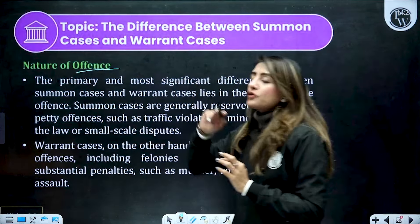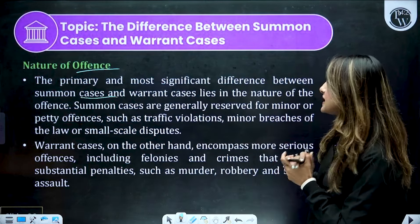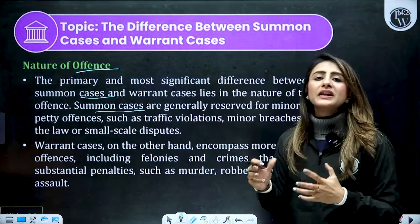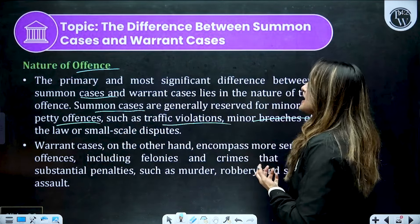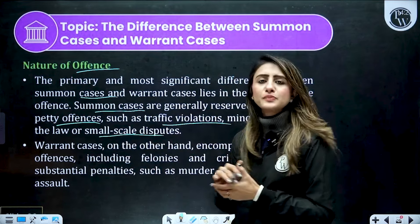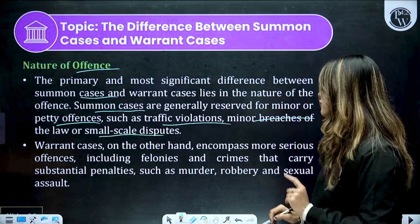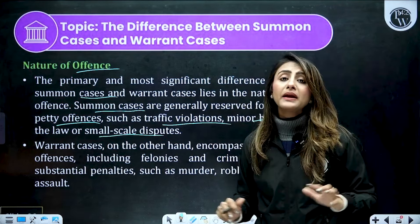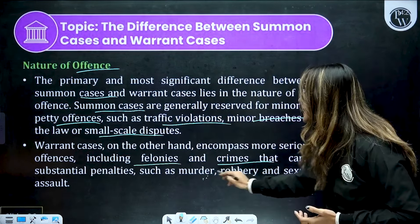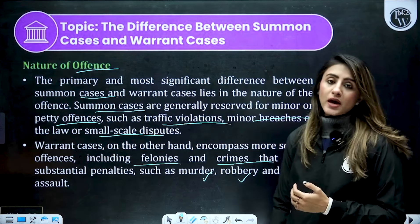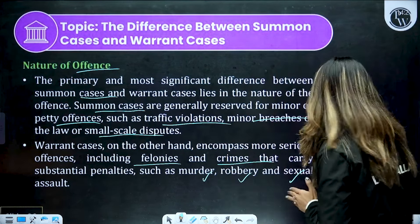What is the difference between the nature of offenses — jaisa abhi hum log ne discuss kiya. The primary difference is ki summon warrant cases ke nature alag hote hain. Jo summon cases hote hain, woh generally summons tab issue hote hain jab aapne koi chote-mote offenses kiye hain, ya koi traffic violations ki hain, ya minor breaches kiye hain, ya small scale chote-mote civil nature ke disputes hue hain — tab us case mein summons issue kiye jaate hain. On the contrary, warrant cases mein warrant tab issue hote hain jab aapne heinous ya serious crimes kiye hote hain — like felonies, crimes such as robbery, murder, sexual assault, etc. Toh heinous offenses ke case mein warrant issue hote hain, and less serious offenses ke case mein summons issue ki jaati hain.